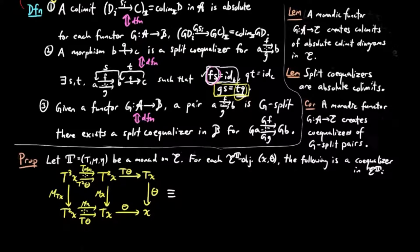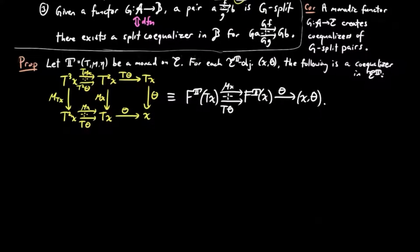And so if this is true, we will see that every Eilenberg-Moore object is a canonical regular quotient of free objects.